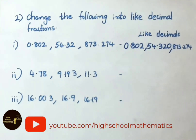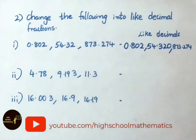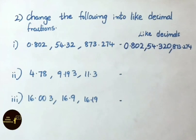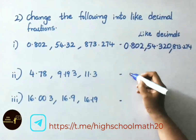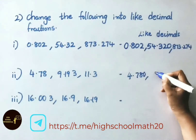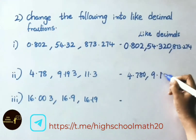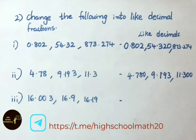See the second sum: 4.7, 89.193, and 11.3. These three decimals have different decimal places. To make them equal we place zeros: 4.700 has 3 decimal places, 89.193 has 3 decimal places, and 11.300 has 3 decimal places. Therefore all three are converted to like decimals.